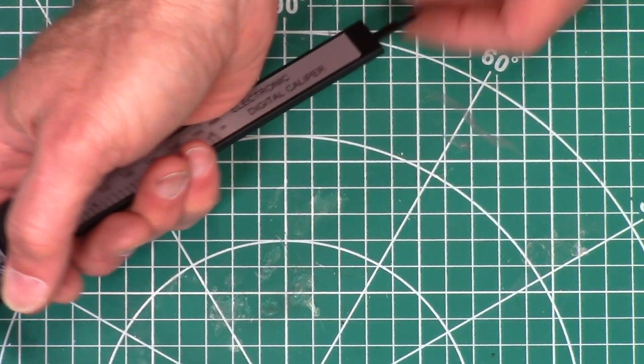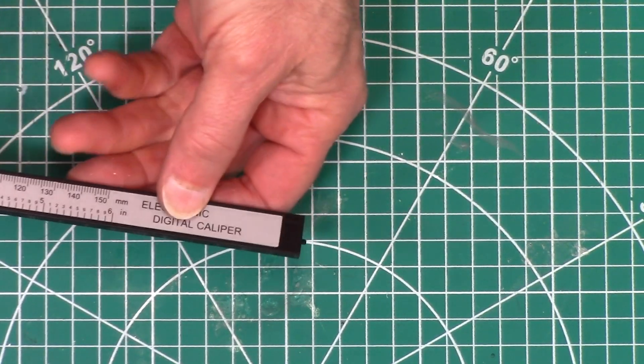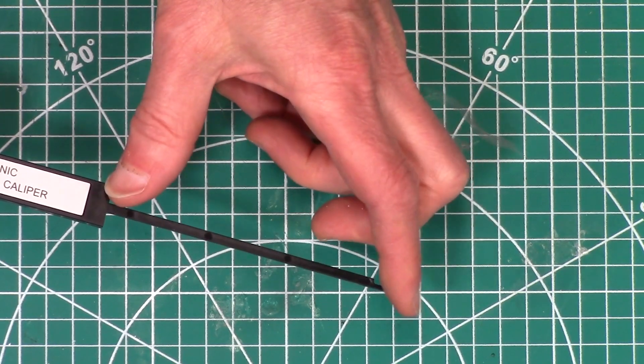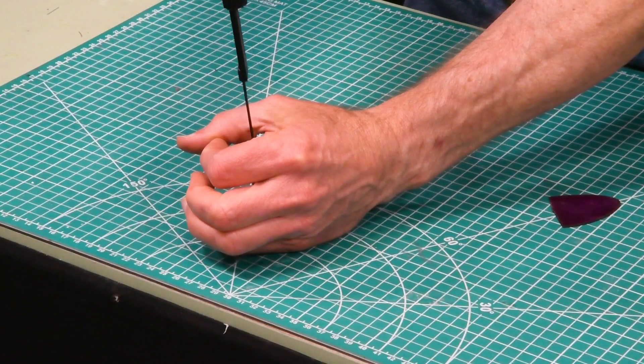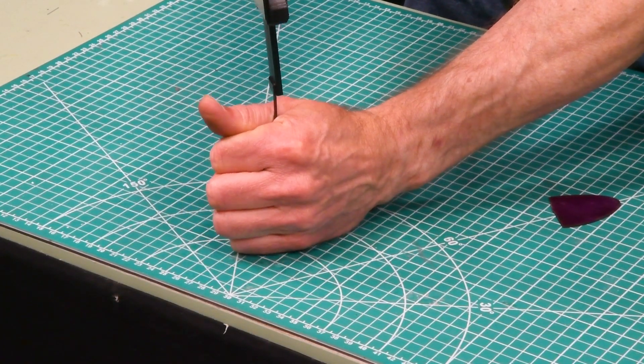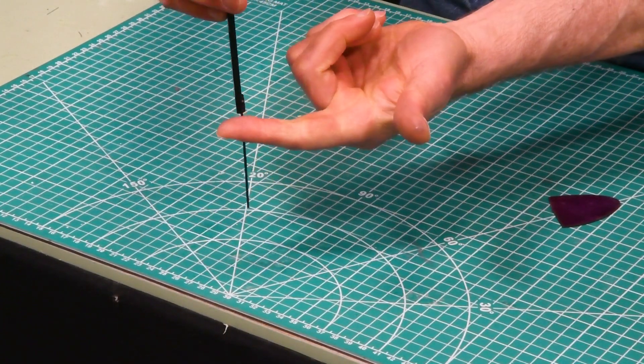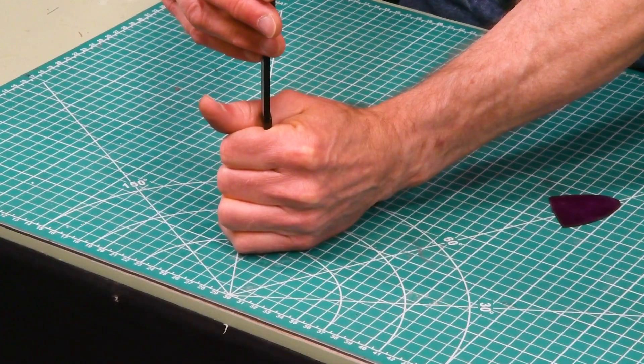It can also be used as a depth gauge. Here on the end, as you extend it open, this little rod comes out. If you stick it down into a hole, you can measure how deep that hole is by bringing this edge down to the edge of the hole.